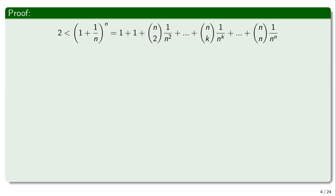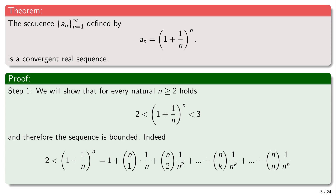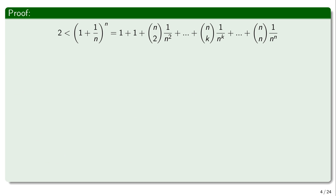Since n times 1/n equals 1, we get that for any n that is at least 2, this equals 1 plus 1, which is at least 2, and all remaining terms are positive. So the lower bound of 2 is now justified. Now we will make some computational effort to show that this sequence is also bounded above by 3.